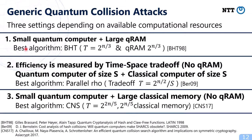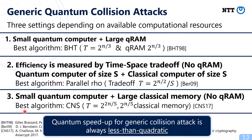So we consider these three settings and the generic attack in each setting. The important point is that quantum speedup for generic collision attacks is always less than quadratic. In the classical setting the generic complexity is 2 to the power n over 2, and in each quantum setting the generic complexity does not achieve 2 to the power n over 4. So quantum speedup for generic collision attacks is always less than quadratic.